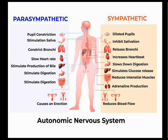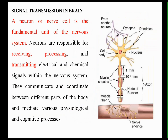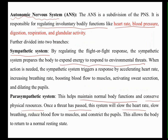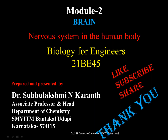So we observe both sympathetic and parasympathetic actions in our body. This has been a brief overview of the human nervous system — the central nervous system and the peripheral nervous system. Thank you.